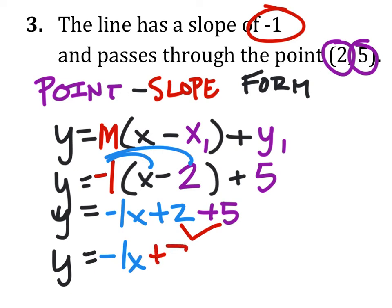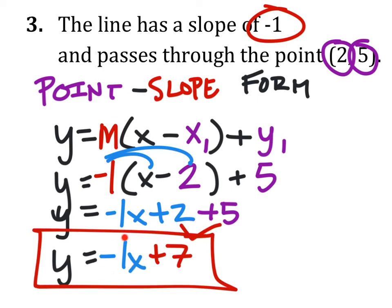2 plus 5 is positive 7. There it is. This tells us the slope from the equation and also the y-intercept.